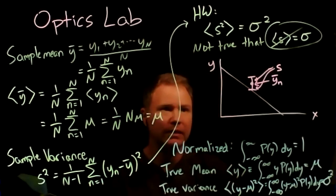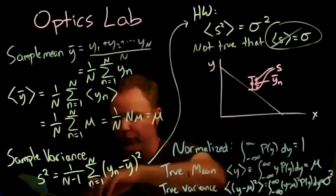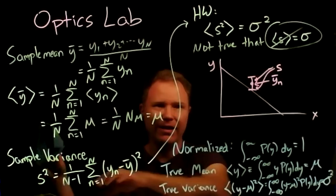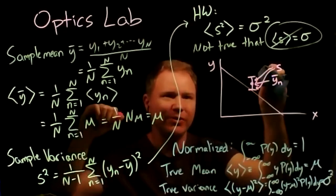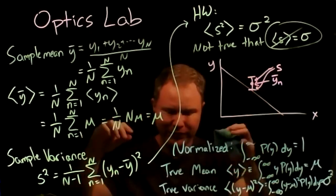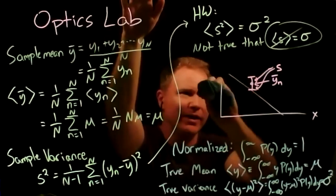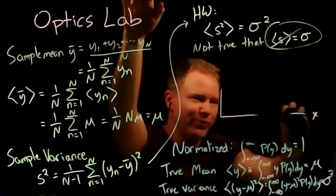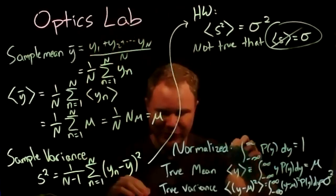As pointed out by a student, shouldn't there be a 1/√n factor in how big the error bar is? Yes — I was getting ahead of myself. Let me talk about the intuition here. Why is it that we're dividing by a number a little bit smaller than n? This intuition plays a role a little bit later too.